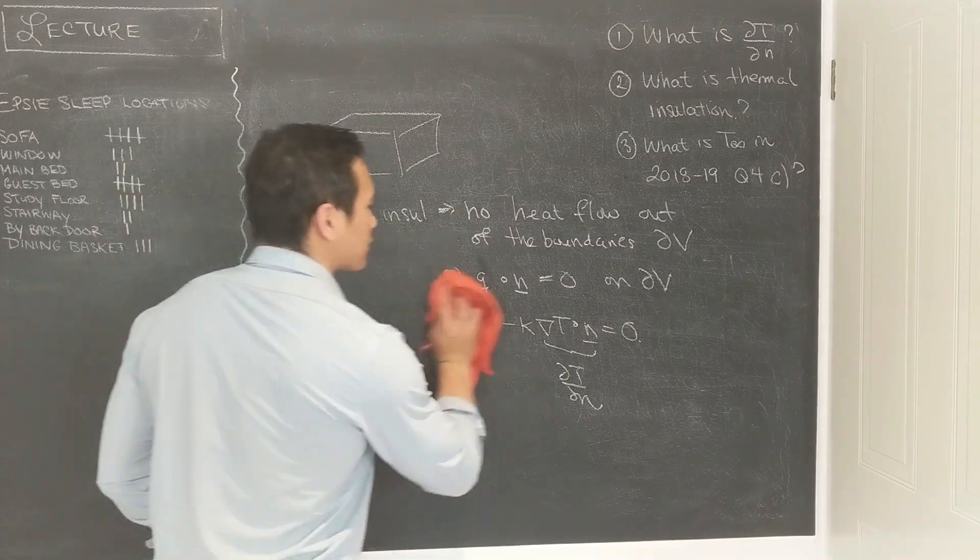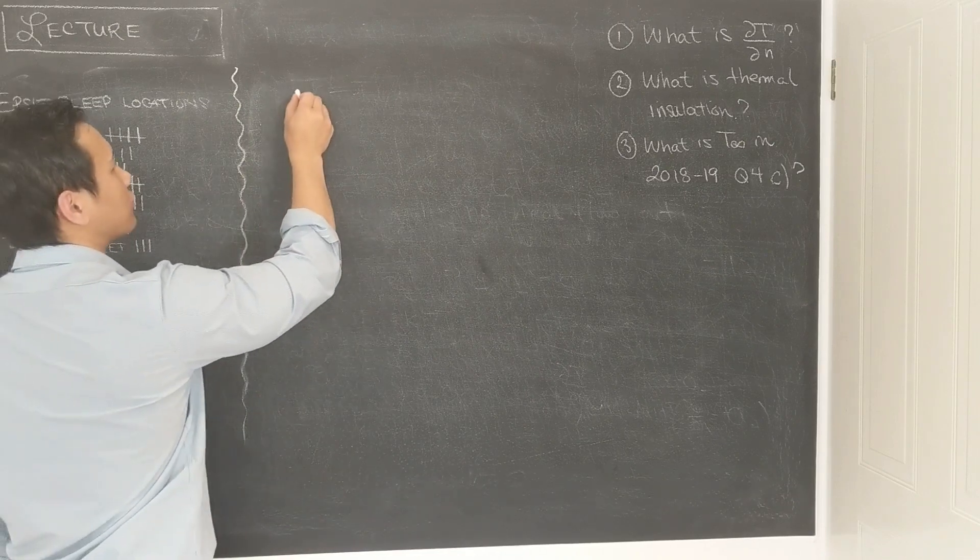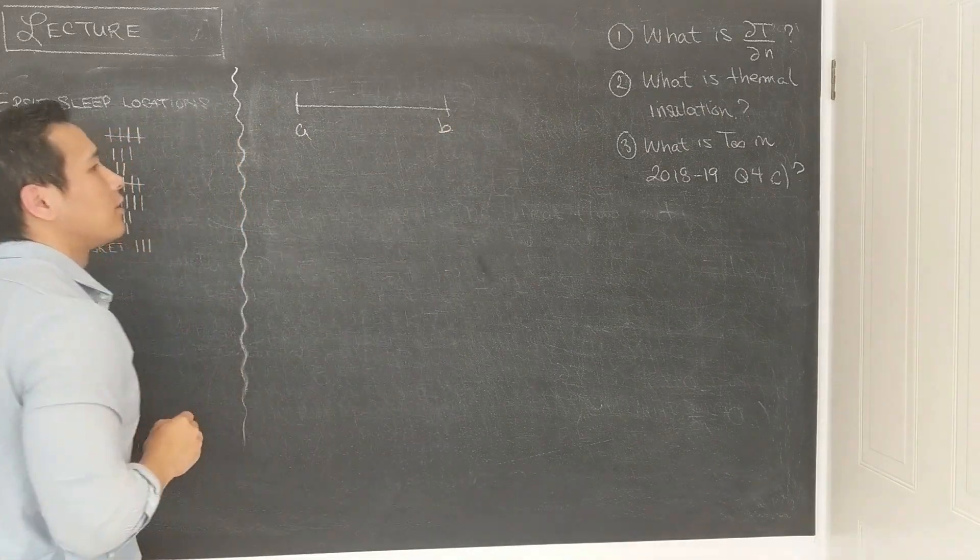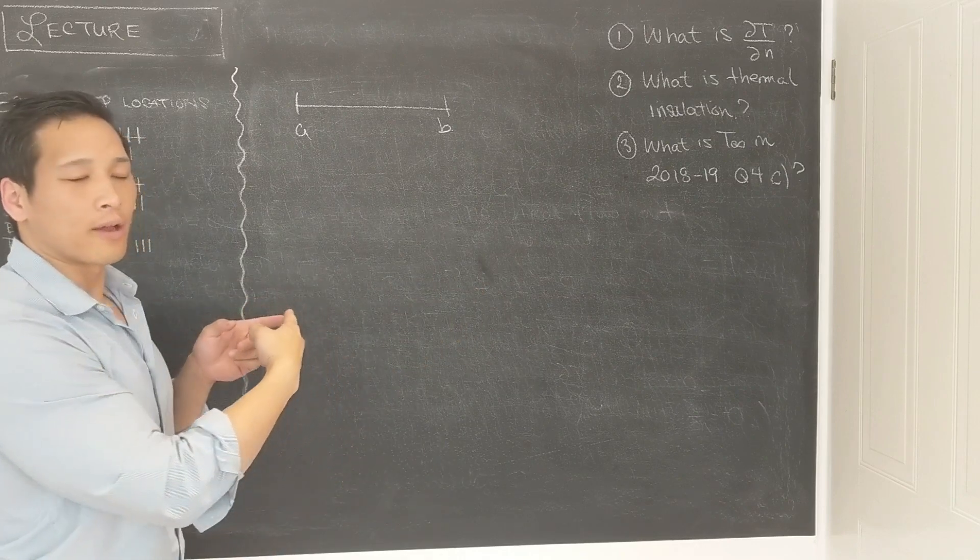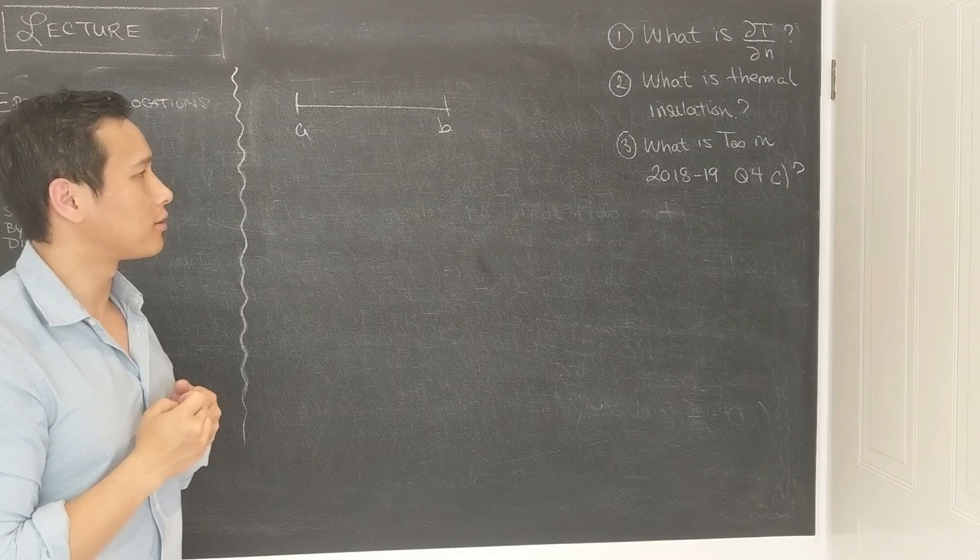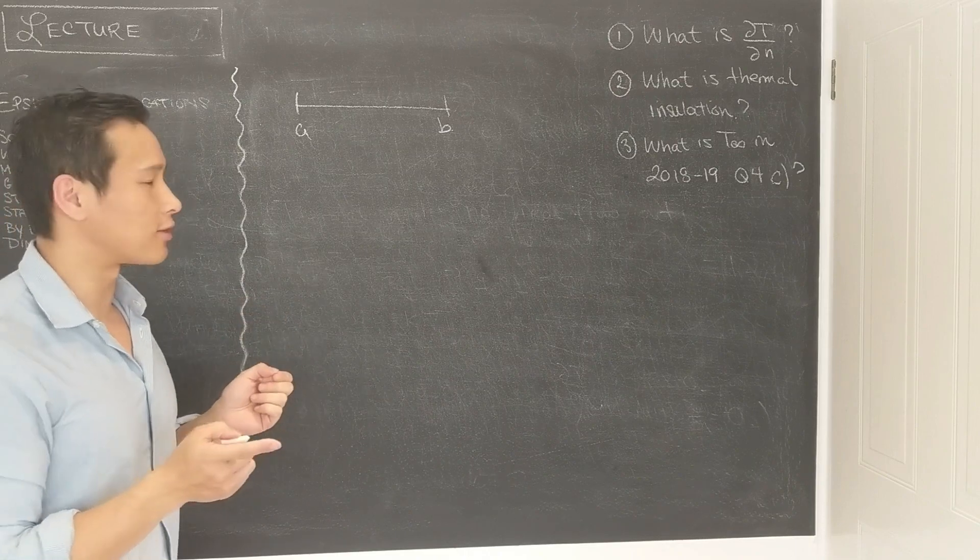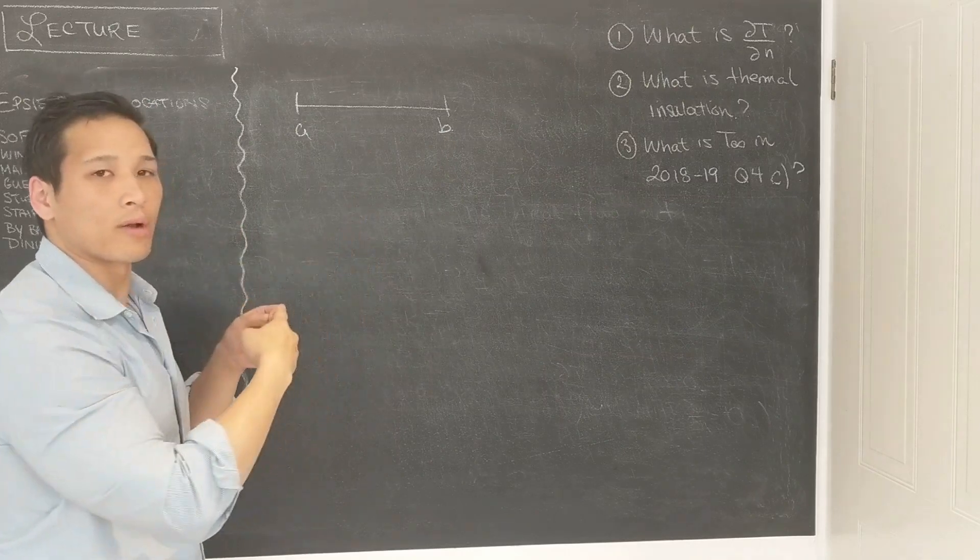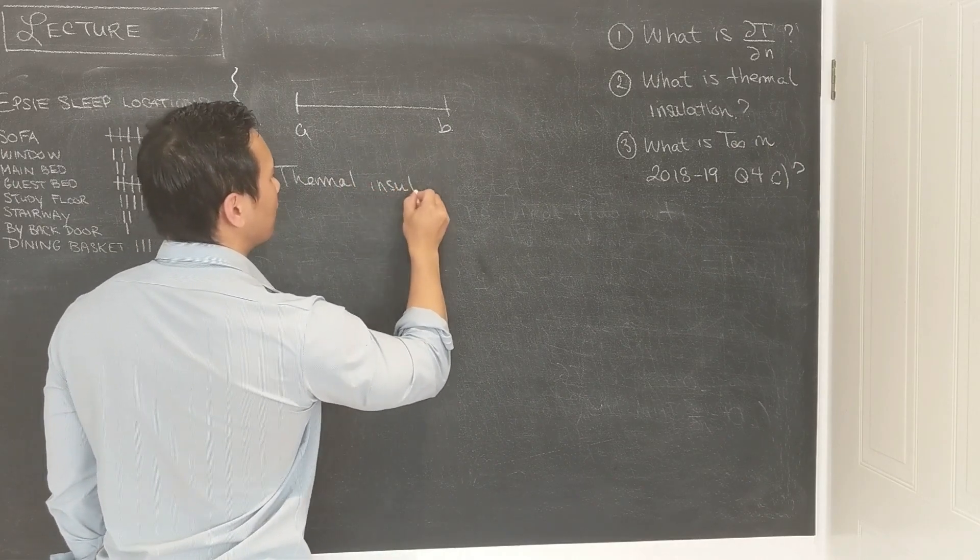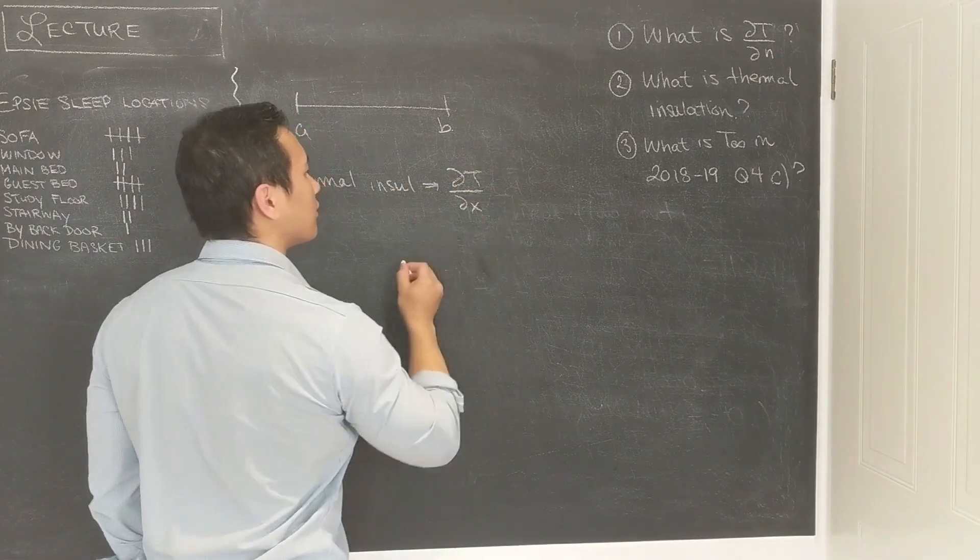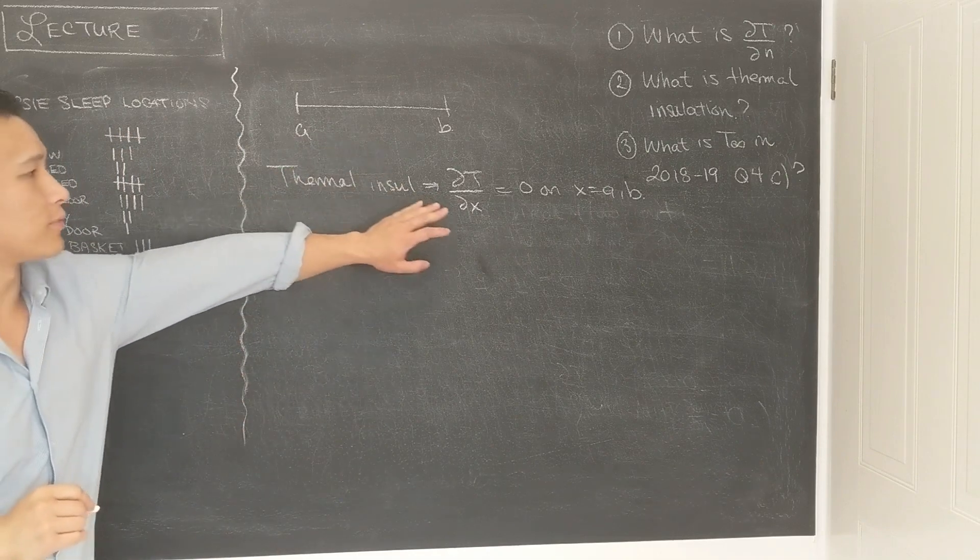Let me give you an example. Suppose that I have a one-dimensional domain, so suppose I have a domain that runs from A to B, here's A, here's B, and I want to measure the temperature in this domain, and you can imagine this to be like a very long cooler. Suppose I tell you that this cooler is thermally insulated. What does that mean? It means that the derivative of the temperature in the normal direction on the boundaries is always 0. In this case, the boundary is at A and at B, is a one-dimensional problem, and so thermal insulation means that dT/dx is equal to 0 on x equal to A or B.